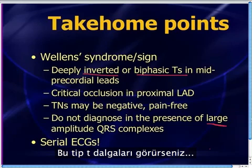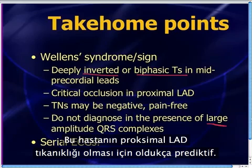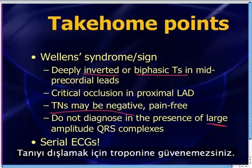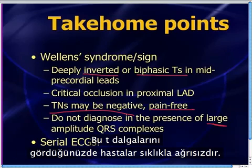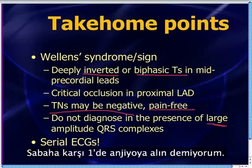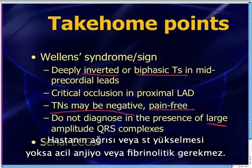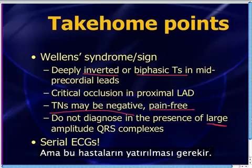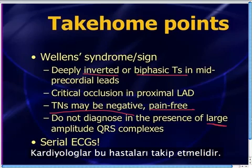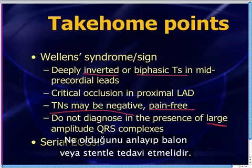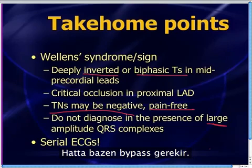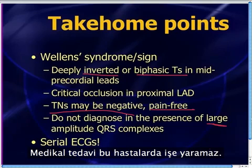A couple of take-home points. Wellens syndrome, Wellens sign, Wellens warning — whatever you want to call it — refers to deeply inverted T-waves (type 1) or biphasic T-waves (type 2) in the mid-precordial leads, V2, V3, sometimes V4. When you see those type of T-waves, it's highly predictive that the patient has a critical occlusion in the proximal LAD. You cannot rely on troponins to rule anything out — troponins are often negative. These patients are often pain-free when you see these T-waves. They need to be managed invasively and aggressively.